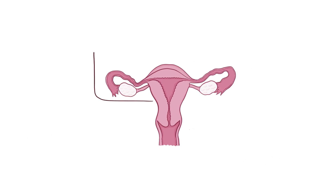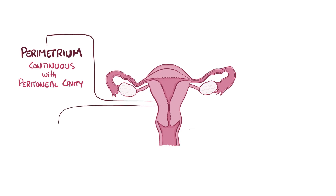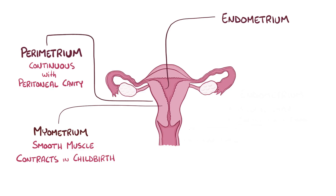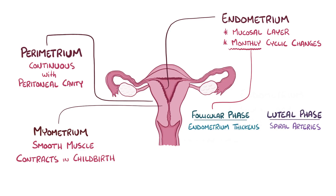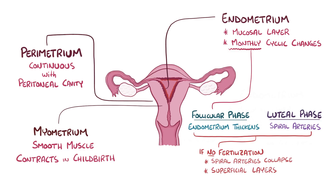The wall of the uterus has three layers. The perimetrium is a layer continuous with the lining of the peritoneal cavity. The myometrium is made of smooth muscle that contracts during childbirth to help push the baby out. And the endometrium is a mucosal layer that undergoes monthly cyclic changes. During the follicular phase of the menstrual cycle, the endometrium thickens in case fertilisation occurs. During the luteal phase, spiral arteries emerge to bring more nutrients to support the thick endometrium. If fertilisation doesn't occur, the spiral arteries collapse and the superficial layers of the endometrium die. During menstruation, the dead tissue is sloughed off of the uterus through the vagina.